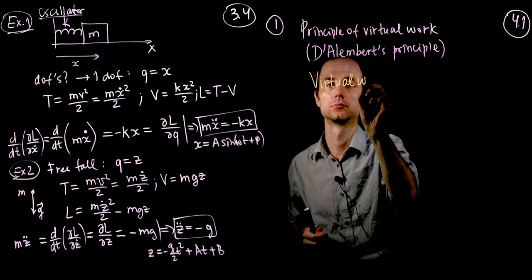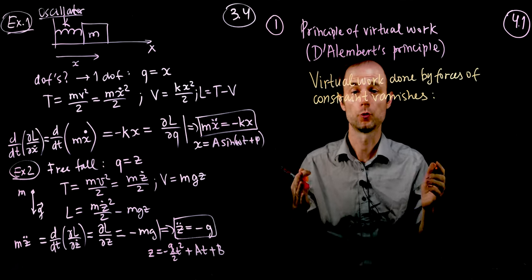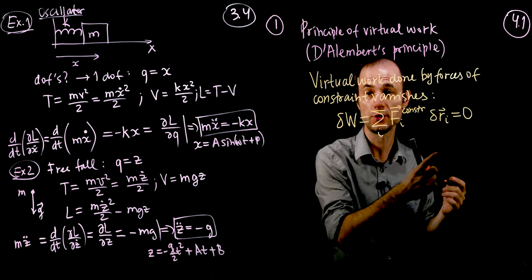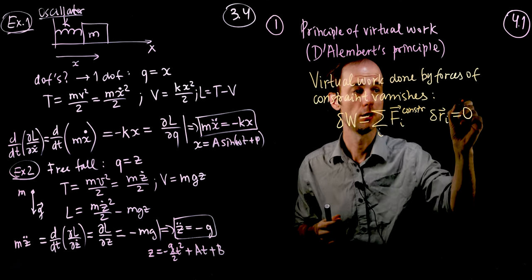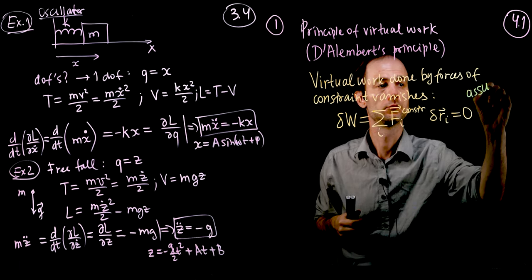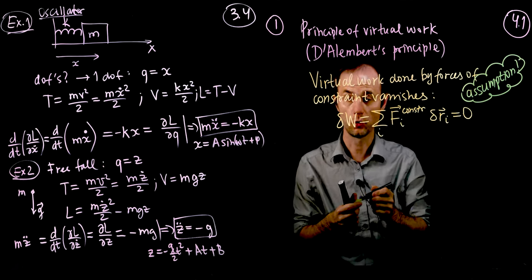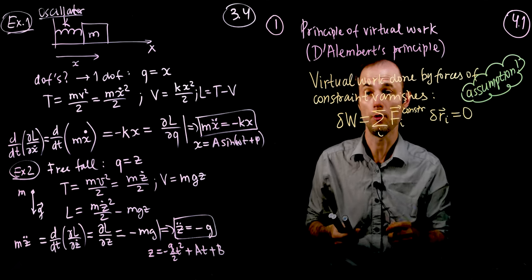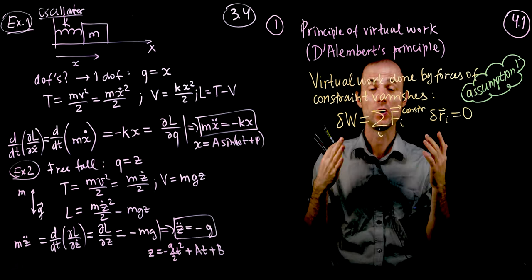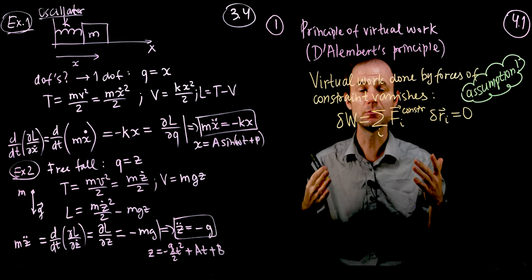We can write it down more formally: the force of constraint times the displacement, summed over all particles, gives us zero. This is an assumption, so we have to be careful when setting the work of forces of constraint equal to zero. But for that wide class of systems where we can do so, we can get rid of the forces of constraint in the equations of motion and significantly simplify the consideration of the system.